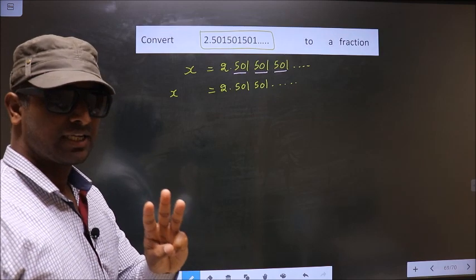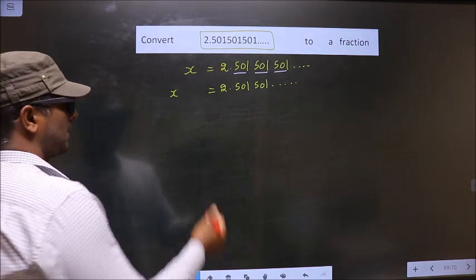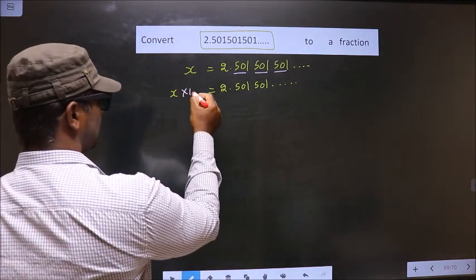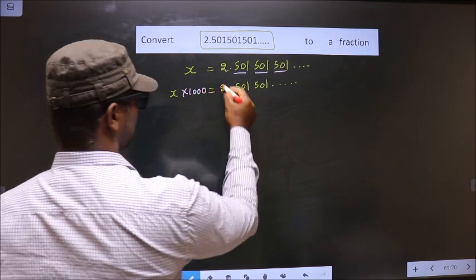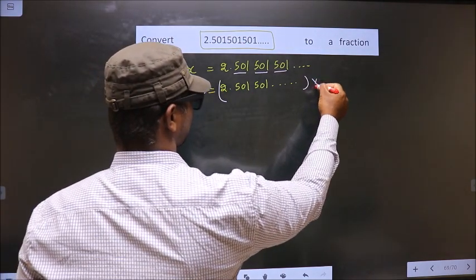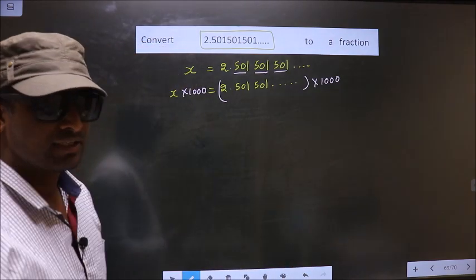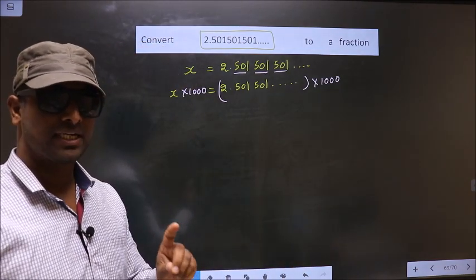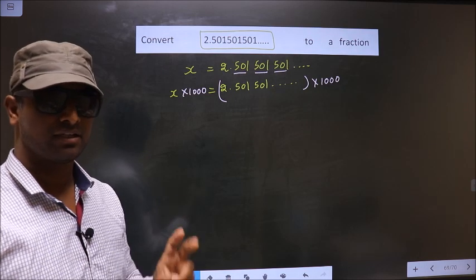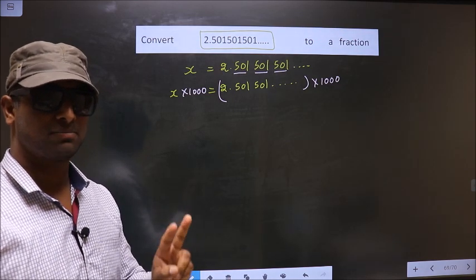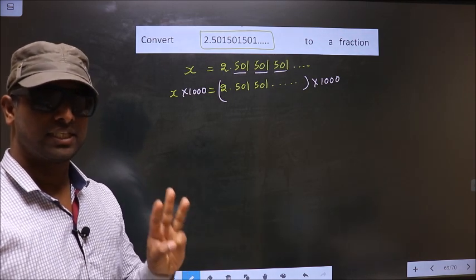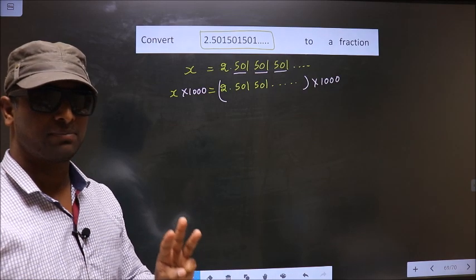Whenever 3 numbers are being repeated, you should multiply by 1000 on both sides. I repeat: whenever 1 number is repeated, you should multiply by 10. When 2 numbers are repeated, you should multiply by 100. When 3 numbers are repeated, you should multiply by 1000.